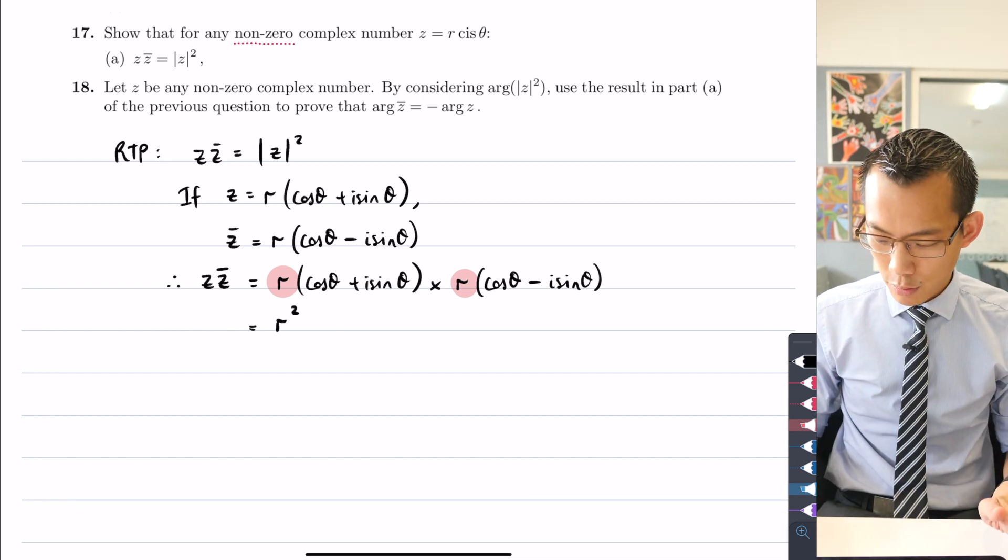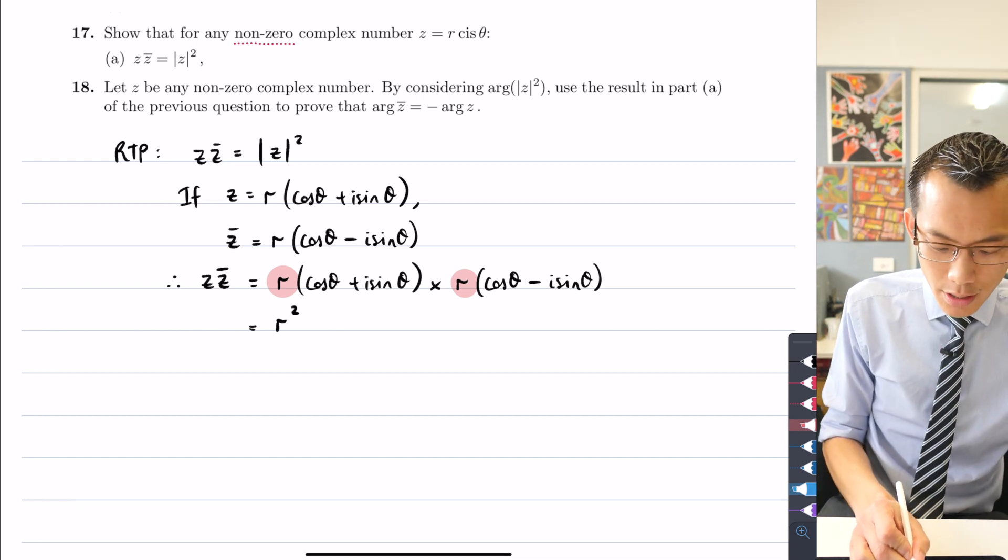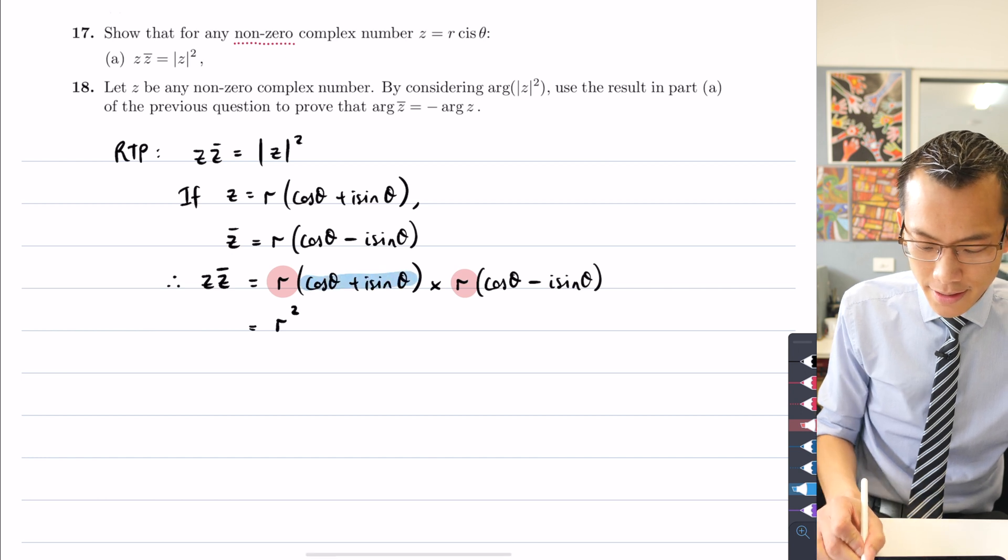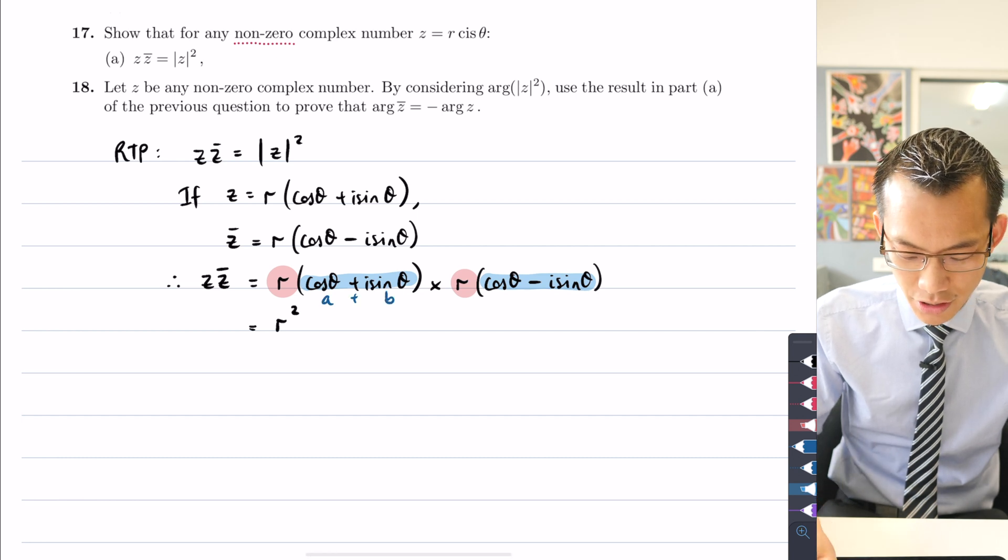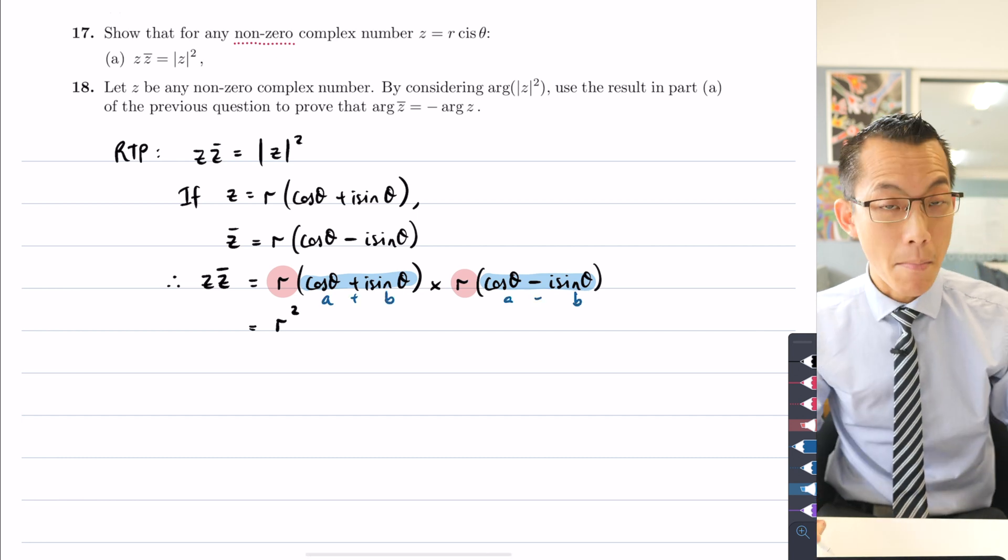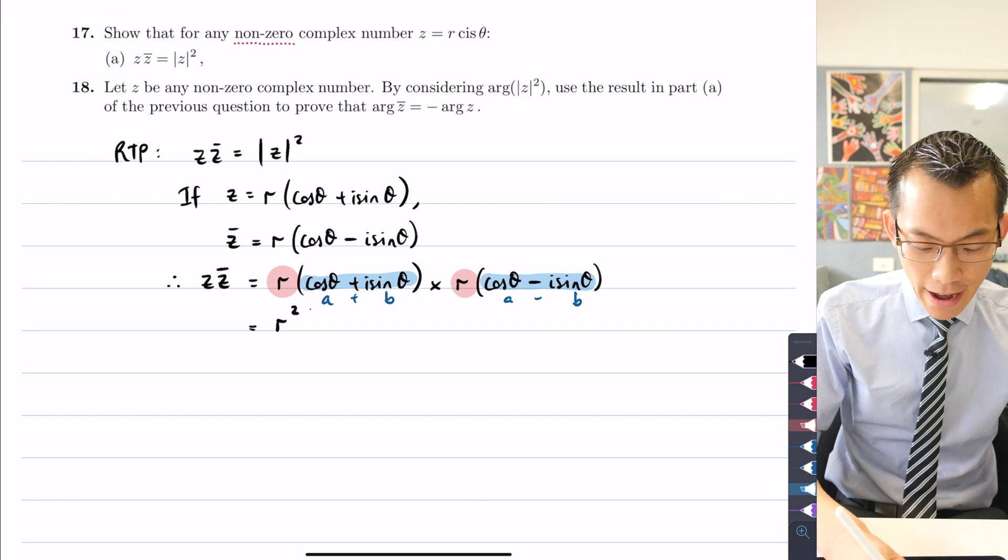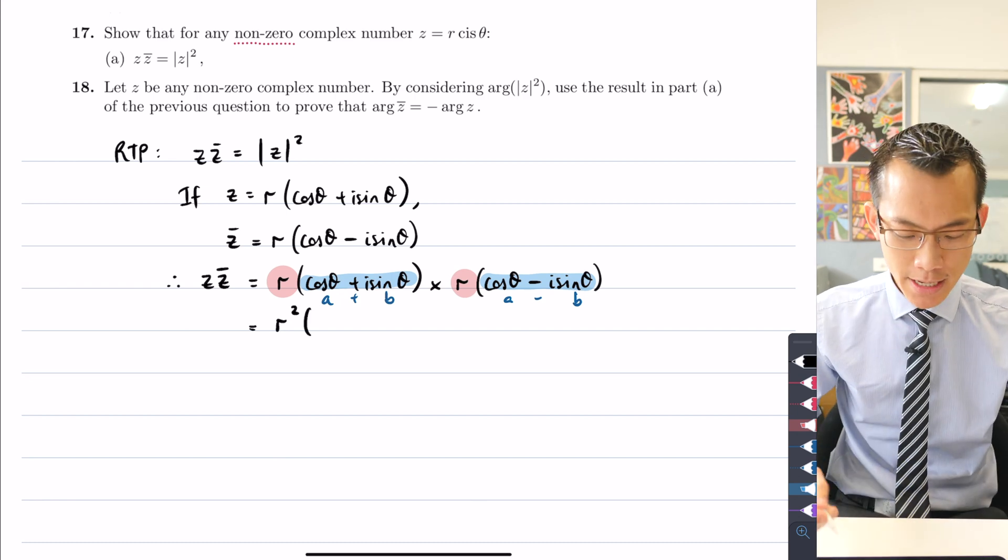And then what you've got, if you look closely here, is you've got something plus something and something minus something. This is kind of a difference of squares situation here, right? a plus b, a minus b. So I can just factorize that as a squared minus b squared.